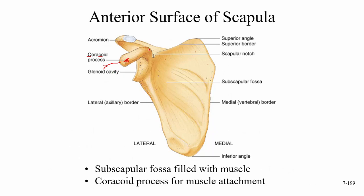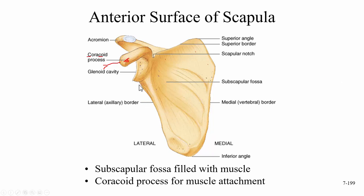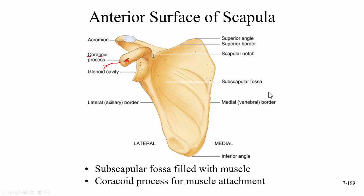To summarize the scapula's other parts: lateral or axillary border, medial or vertebral border, inferior angle, superior angle, superior border, scapular notch, glenoid cavity, and the acromion — the area that attaches to the clavicle to form the acromioclavicular joint.